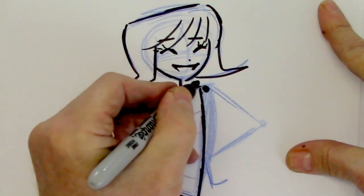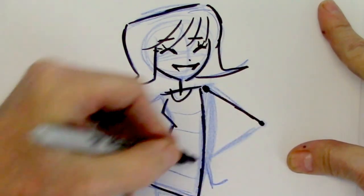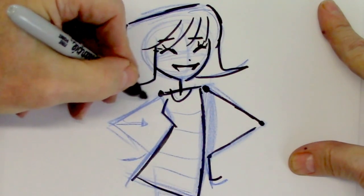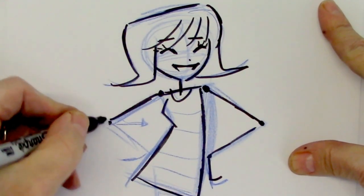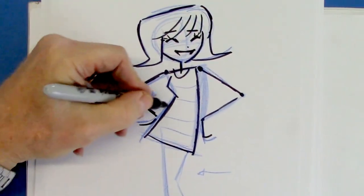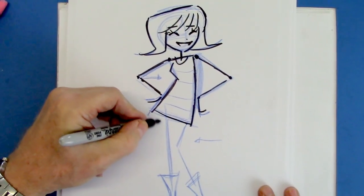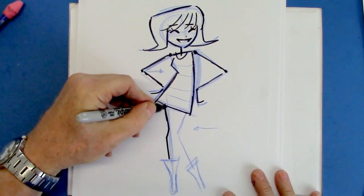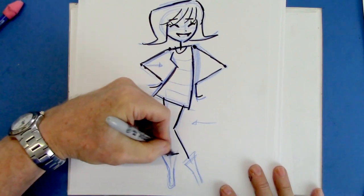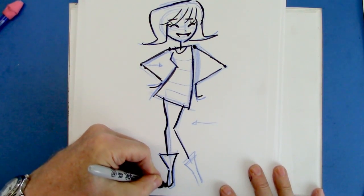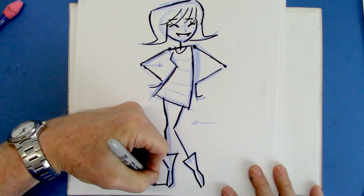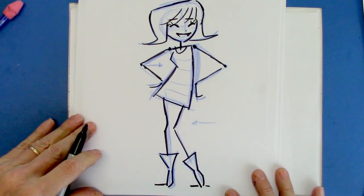Shoulder, elbow, wrist, and arm back. Shoulder, elbow, wrist, stick. Back. A little line to show ground line there.